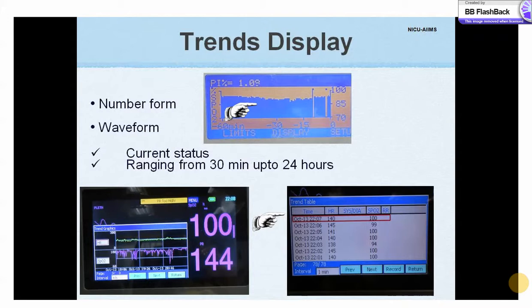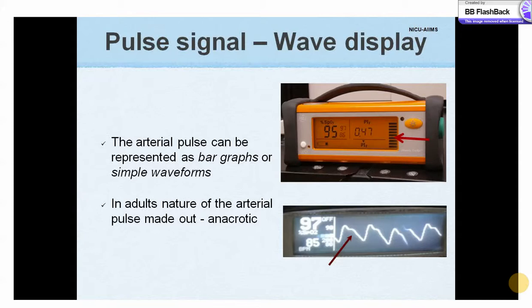The display style can be changed from the plethysmographic waveform to simple number format. The trend over 30 minutes up to 24 hours can be viewed as waves or bar diagrams, and trends can also be represented in the form of a table. The arterial pulse can be represented as bar graphs or simple waveforms. In adults, the nature of the arterial pulse can easily be discerned, which is usually anacrotic with a clear notch.